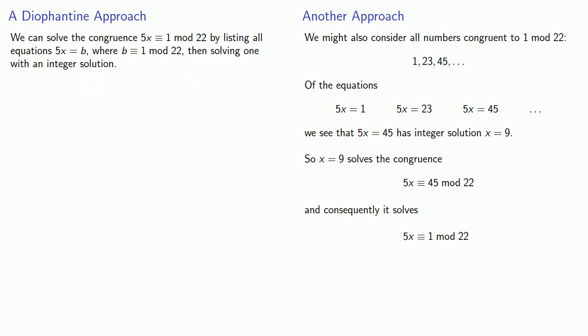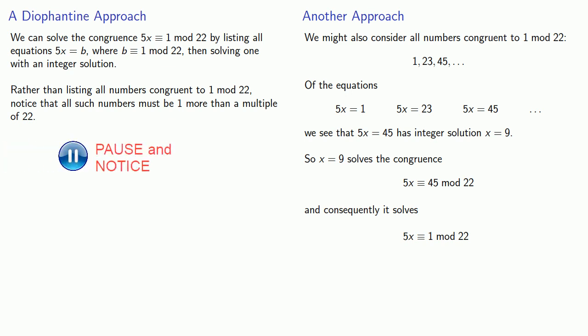So let's think about how we can refine this approach. Rather than listing all numbers congruent to 1 mod 22, notice that all such numbers must be one more than a multiple of 22. This suggests the following approach: introduce a new variable y, and then find whole number solutions to 5x equals 22y plus 1.